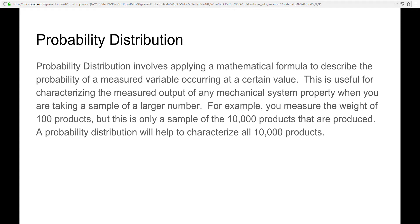This involves applying a mathematical formula to describe the probability of a measured variable occurring at a certain value. This is useful for characterizing the measured output of any mechanical system property when you are taking a sample of a larger number. For example, if you measure the weight of a hundred products, but this is only a sample of the 10,000 products that are actually produced, a probability distribution will help to characterize all 10,000 products just with that hundred product sample.